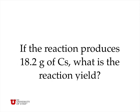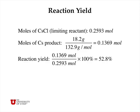If the reaction produces 18.2 grams of cesium, what's the reaction yield? The number of moles of cesium chloride, the limiting reactant, was 0.2593 moles. The moles of cesium product is 18.2 grams divided by the molar mass of cesium, giving us 0.1369 moles of cesium. The reaction yield is 0.1369 moles divided by the starting number of moles times 100 percent, giving us 52.8% yield.